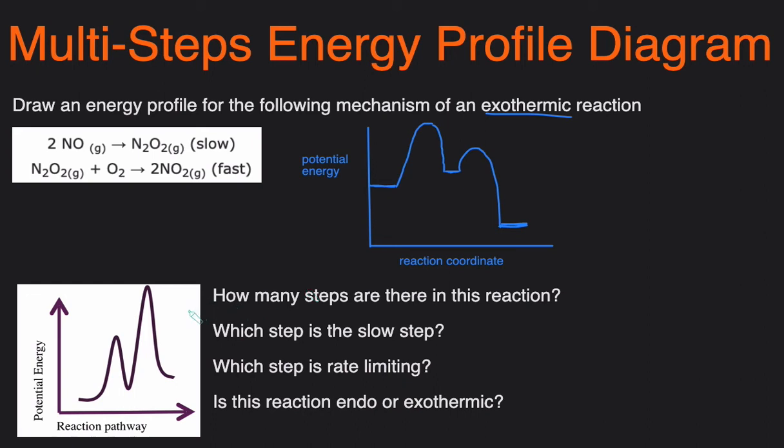Now let's take a look at another energy profile diagram and let's answer the following questions. It's asking us how many steps are there in this reaction? Well there are two peaks so that means there are going to be two steps. If there were three peaks then that would be three steps and four peaks four steps and so on.